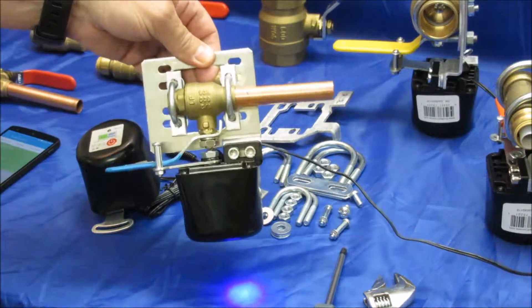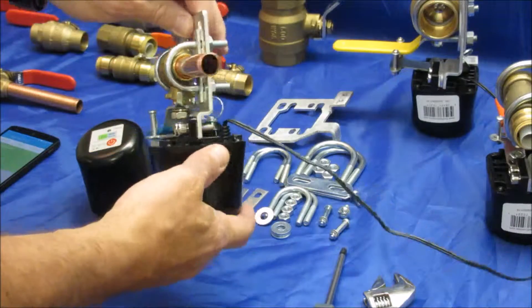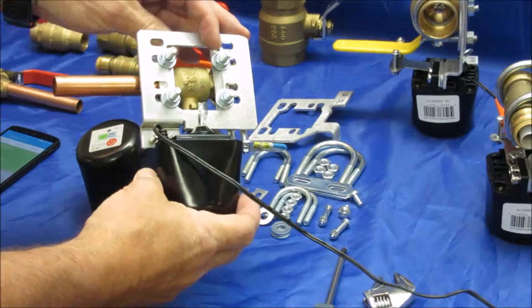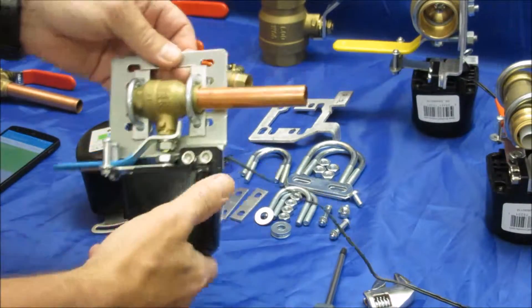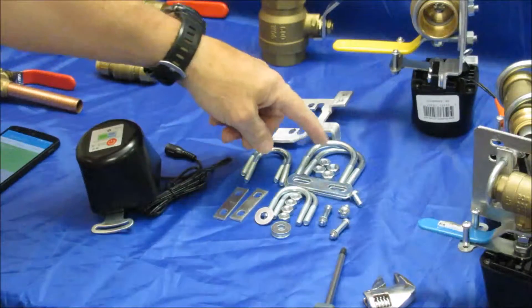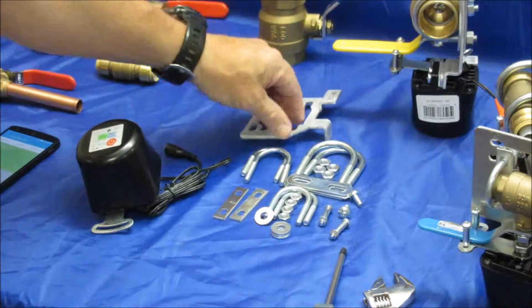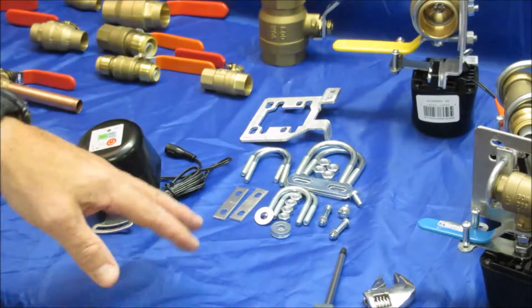So here's one that's already been mounted, and it uses our standard mounting bracket. The mounting kit comes with three sets of U-bolts, a mounting plate, some spacers, nuts, and washers.